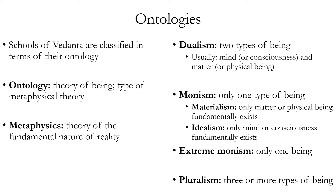Another type of monism is called extreme monism. Monism generally holds that there's one general type of being, but extreme monism posits not only one type of being but one individual — what philosophers would call one token of a type. For example, there are theories that God is the only ultimately existing being, which could be a form of extreme monism. Pluralism, the third main type of ontology, simply means you believe in three or more fundamental types of being or existence.